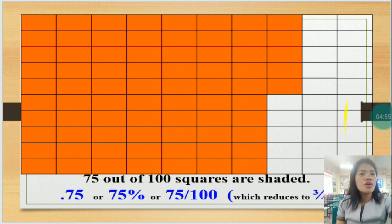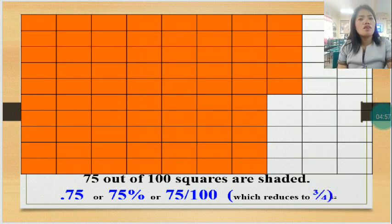Then 0.75, or 75%, or 75 over 100, which reduces to three-fourths.